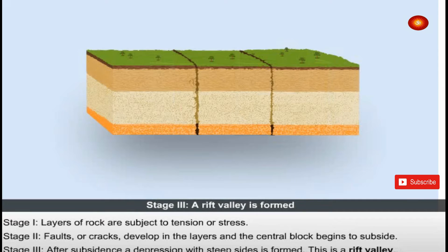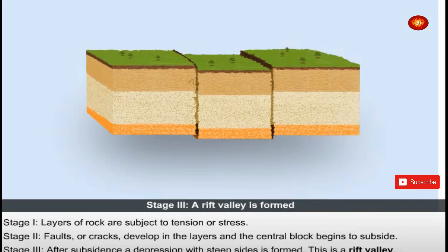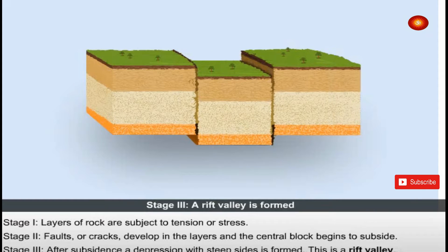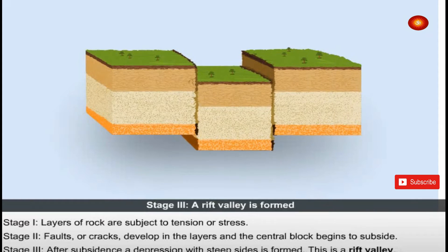In Stage 3, after subsidence, a depression with steep sides is formed. This is a rift valley.